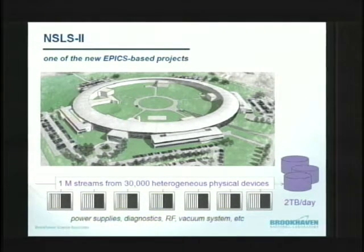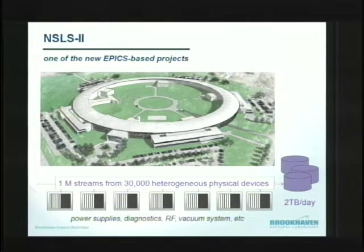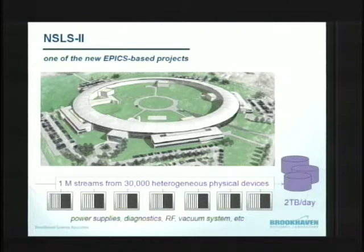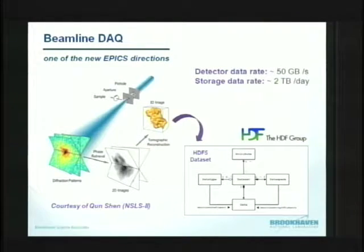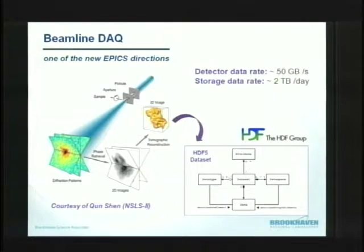This data is needed for post-processing, analyzing, troubleshooting, and commissioning of operations. As stated previously, relational databases scale but don't scale very well, so new technologies are needed to solve this problem. An example beamline data acquisition system comes together with accelerator projects, and new facilities have detector data rates on the scale of 50 gigabytes per second — a really enormous rate.